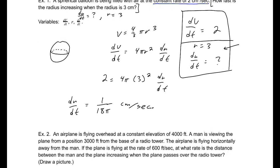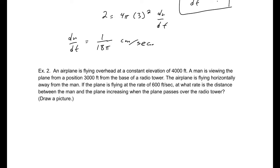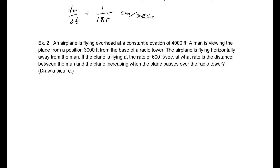Let's look at number 2. An airplane is flying overhead at a constant elevation of 4,000 feet. A man is viewing the plane from a position of 3,000 feet from the base of a radio tower. The airplane is flying horizontally away from the man. If the plane is flying at a rate of 600 feet per second, at what rate is the distance between the man and the plane increasing when the plane passes over the radio tower? The hint here is: draw a picture.